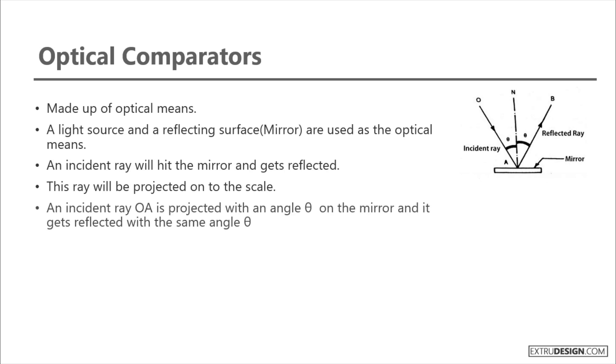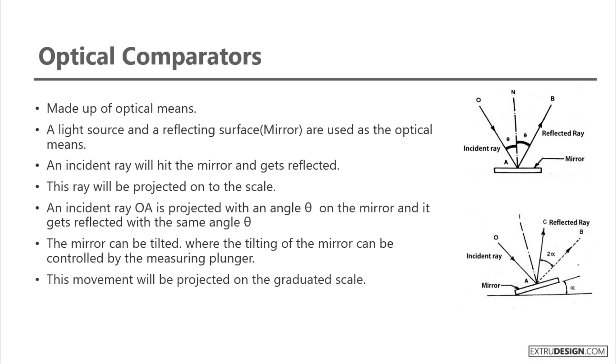An incident ray is projected with an angle theta on the mirror and it gets reflected with the same angle theta. The mirror can be tilted, where the tilting of the mirror can be controlled by the measuring plunger. This movement will be projected on the graduated scale.